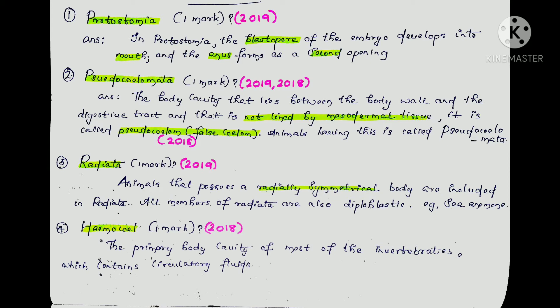So, to be in the Radiata group, an animal must have radial symmetry and must be diploblastic — having two germ layers. That is why all animals in the Radiata group share these two features.